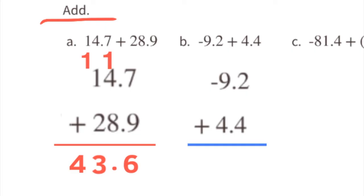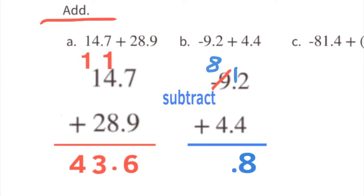Part B: negative 9 and 2 tenths plus 4 and 4 tenths. Since the absolute value of negative 9.2 is greater than the absolute value of 4.4, we know our answer is going to be negative. To find the answer, we subtract 4.4 from 9.2, giving us negative 4 and 8 tenths.